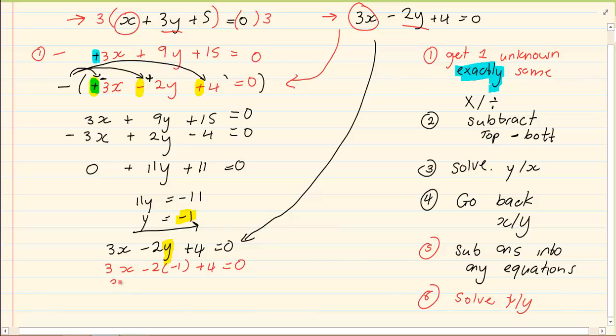So we have 3x minus 2 times negative 1 gives me positive 2 plus 4 is equal to 0. We have 3x is equal to minus 6. x is equal to minus 2.